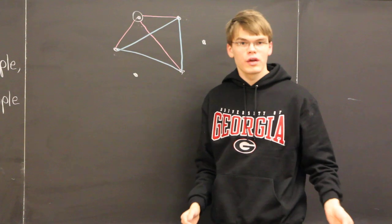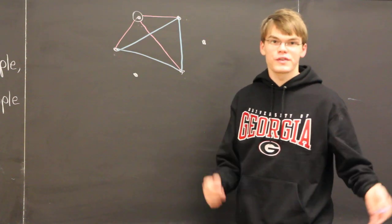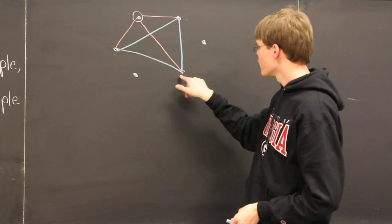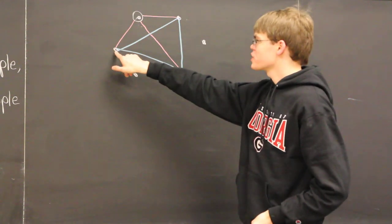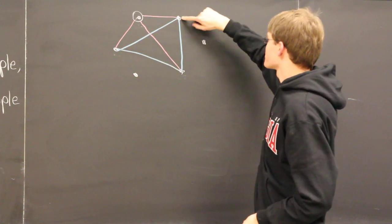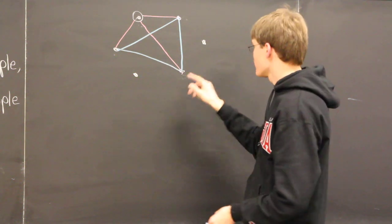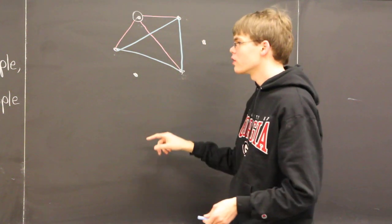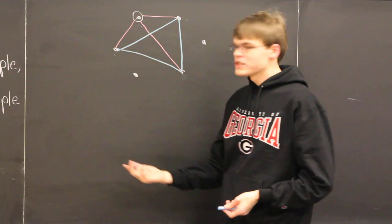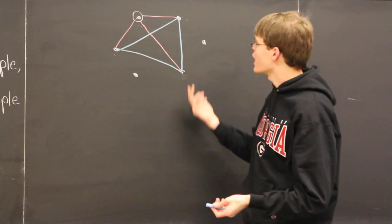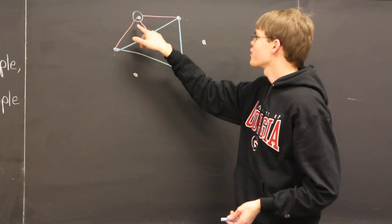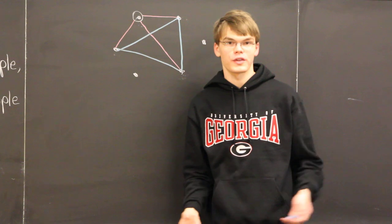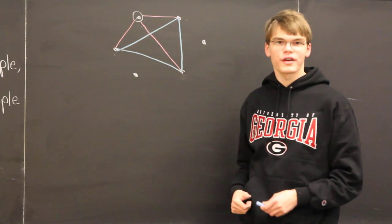And now at this point, we're finished — we have arrived at a contradiction. We have a monochromatic blue triangle: this person is strangers with this person, strangers with this person, and strangers with this person. We have a blue monochromatic triangle, which shows that there must be at least three mutual strangers. Of course, we could have started by assuming this person was a stranger with three others — it would be an identical argument, just swapping the colors. And this concludes our proof.